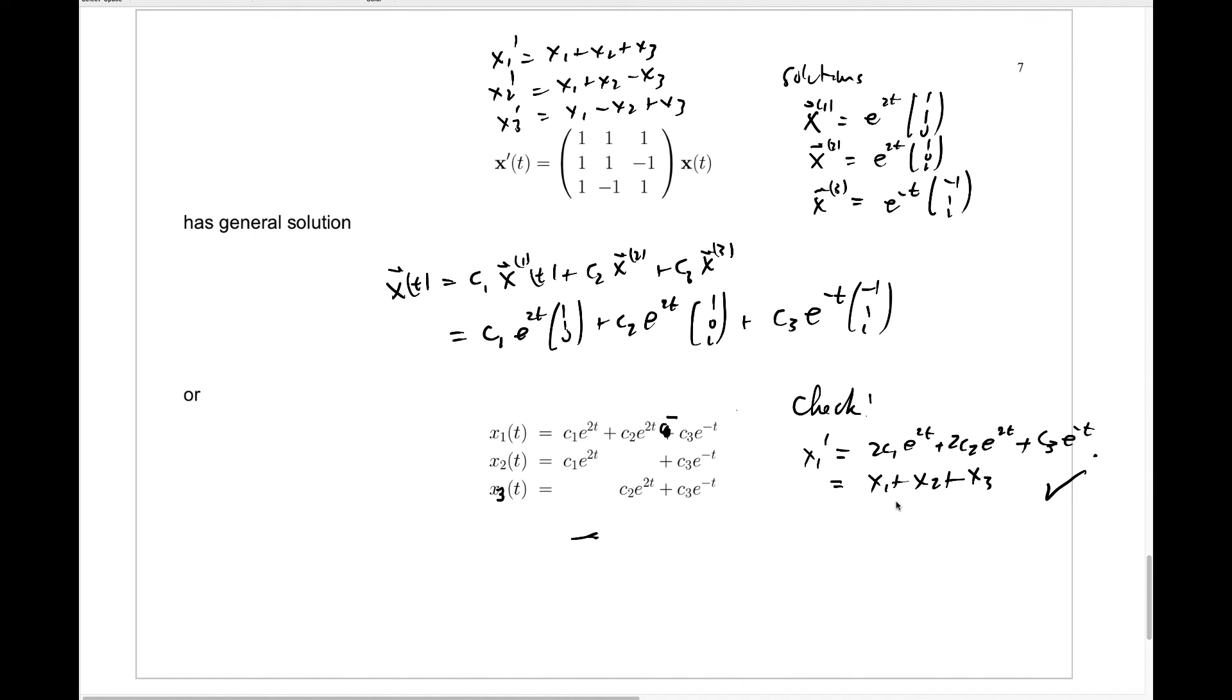And we should check these other two. x2 prime, when I differentiate x2 here, I'll get 2c1 e to the 2t minus c3 e to the minus t. And is this really x1 plus x2 minus x3? This plus this minus this is 2c1 e to the 2t. That's good. This plus this minus this gives me 0. This plus this minus this gives me minus c3 e to the minus t. And that's a check—that's equal to x1 plus x2 minus x3.